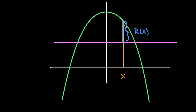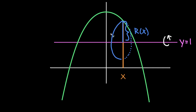Why is that line segment r(x)? Because if we take this blue line segment labeled r(x) and rotate it around the axis of rotation — which is the line y equals 1 — we get a circle. The radius of that circle is exactly that original line segment labeled r(x). So we're looking for a function that tells us that radius.